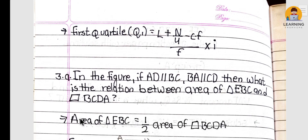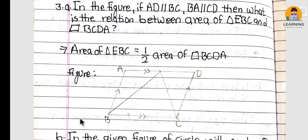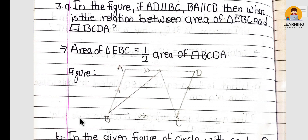Question 3(a): In the figure, if AD is parallel to BC and BA is parallel to CD, then what is the relation between the area of triangle EBC and parallelogram BCDA? Area of triangle EBC = (1/2) × area of parallelogram BCDA.